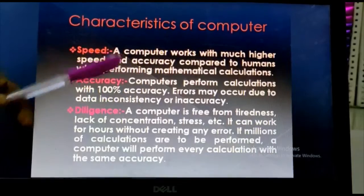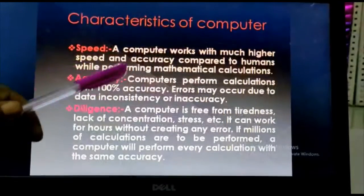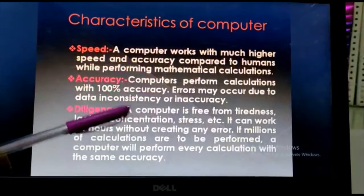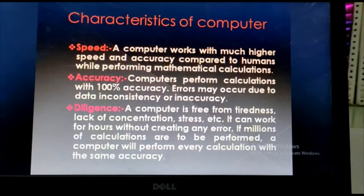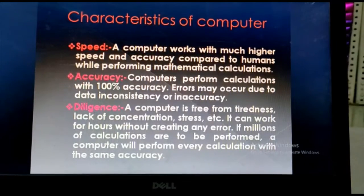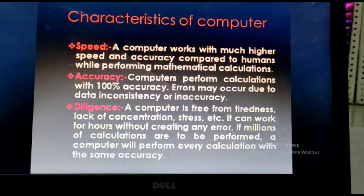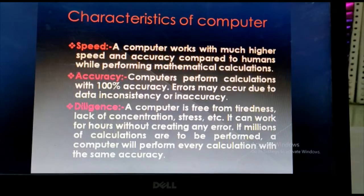First is speed. A computer works with much higher speed and accuracy compared to humans while performing mathematical calculations. For example, if we want to add large amount of numbers then computer can do it in few seconds but human can take more time to do it.